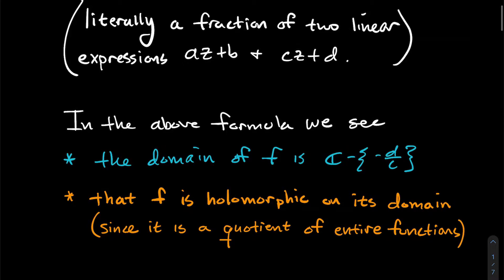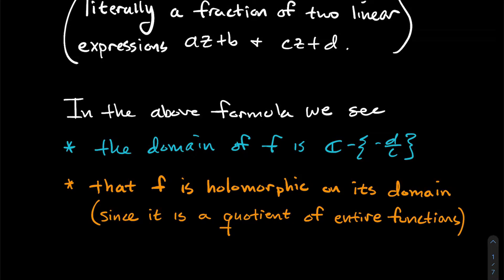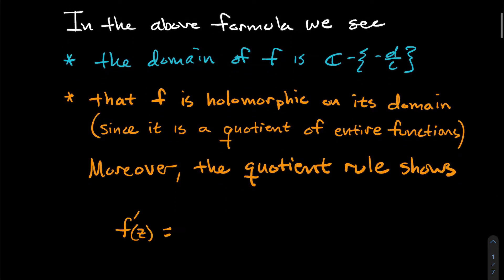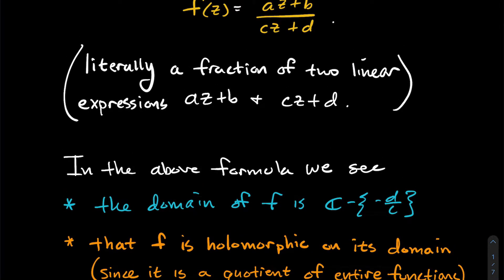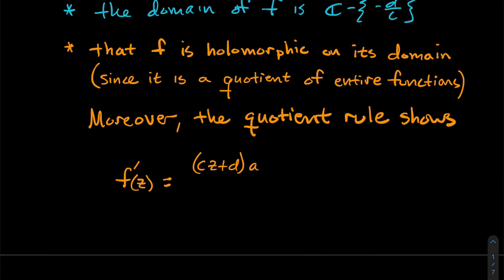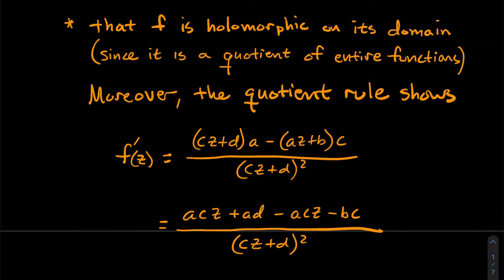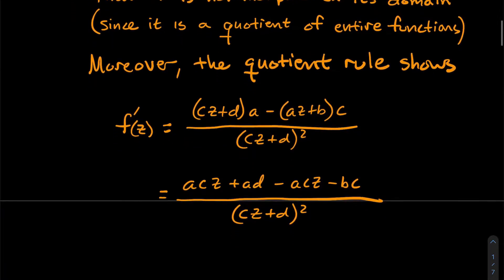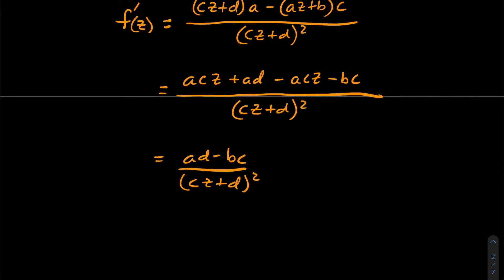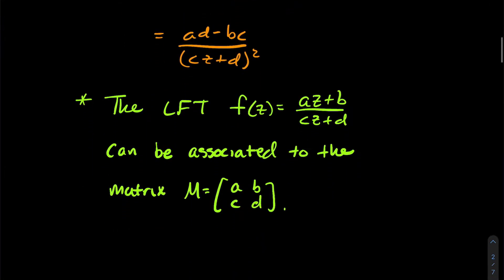How do I know it's holomorphic? Because az + b and cz + d are individually both entire functions — entire meaning holomorphic everywhere. With the quotient rule — low d-high minus high d-low, divided by low squared — when I distribute and combine like terms, the derivative reduces to (ad - bc) / (cz + d)². We're going to come back to that later.